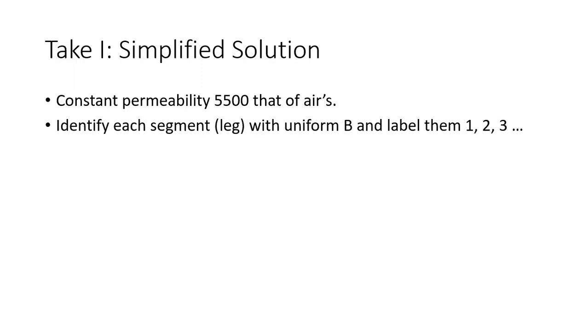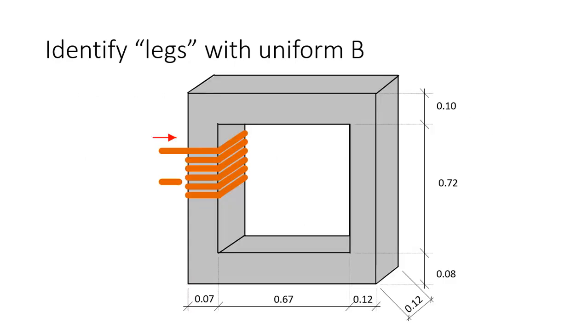Assuming that the permeability of the iron is given as 5,500 times the permeability of air, identify every segment or leg that we think will have a uniform flux density and label those segments, those legs as 1, 2, 3, 4, etc. I better show how it is done. Look, that is the circuit and the dimensions are given in meters. In there, I'll identify each leg with a number when I think that the flux density will be uniform.